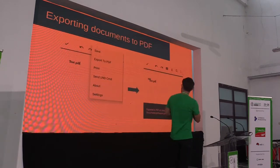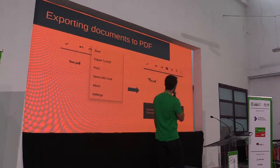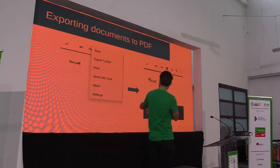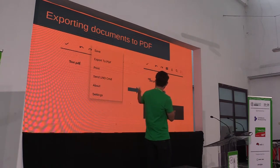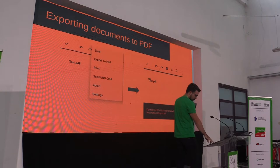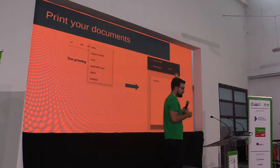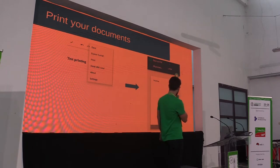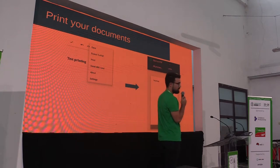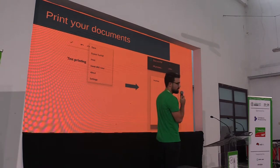The first new feature is exporting PDF documents. Now the Android Viewer can export your LibreOffice documents to PDF with this export option. The other feature is a printing option — you can print all of your documents, whether they are LibreOffice documents or other document types, and you can print them using the Android Viewer.